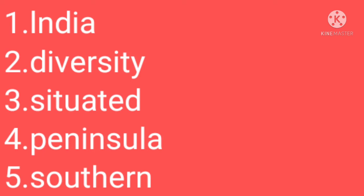Hope all are repeating after me. Next word is peninsula — P-E-N-I-N-S-U-L-A, peninsula. Next word is southern — S-O-U-T-H-E-R-N, southern. Once more I repeat: India, diversity, situated, peninsula, and southern.